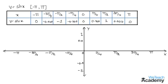Now let us plot the values of y corresponding to the values of x. For x equal to minus pi, y equals zero, so the point lies on the x-axis. For minus 3pi by 4, y equals minus 0.707, so we get a point where minus 3pi by 4 and minus 0.7 meet. For minus pi by 2, y equals minus 1, so we get a point where minus pi by 2 and minus 1 intersect. For x equal to 0, y equals 0, which is the origin.